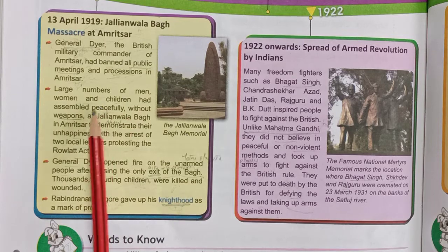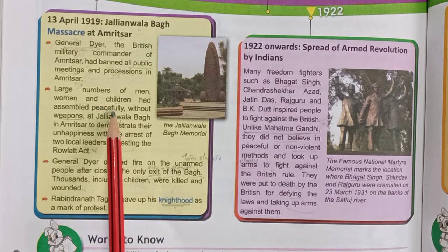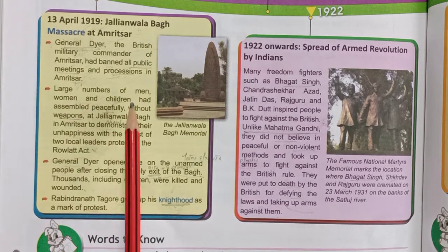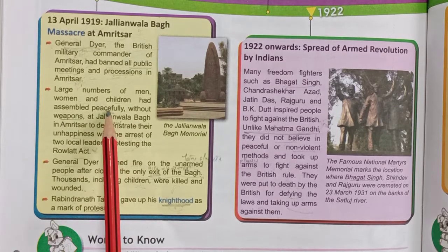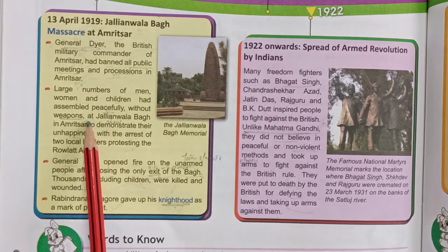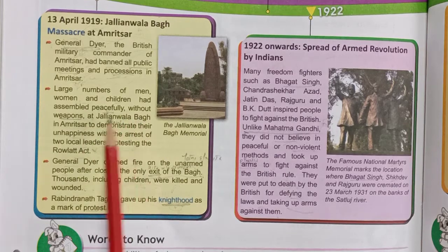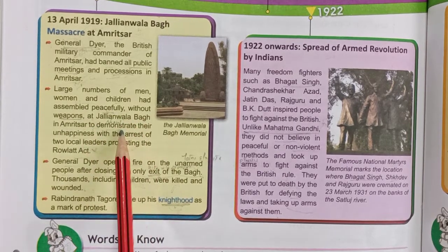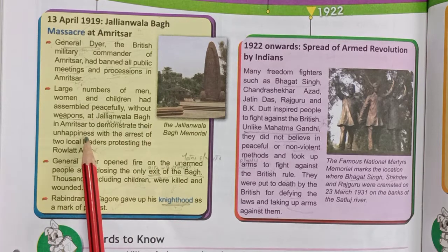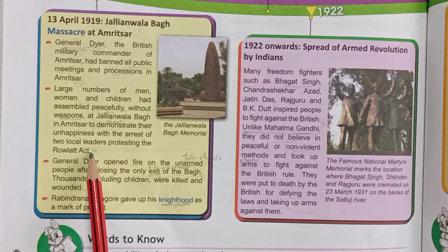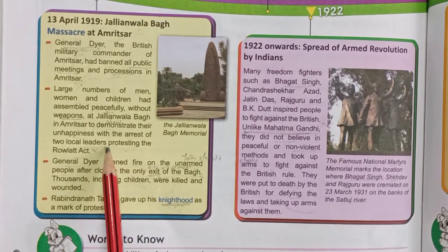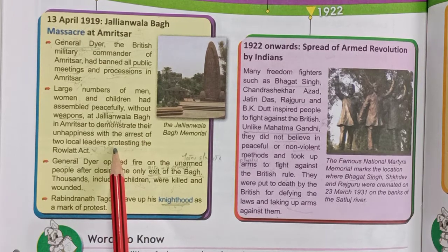A large number of men, women, and children had assembled peacefully at Jallianwala Bagh, Amritsar, without weapons. They gathered to demonstrate and show their unhappiness with the arrest of two local leaders who were protesting the Rowlatt Act.